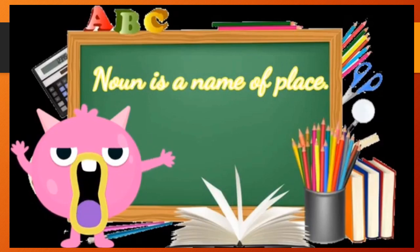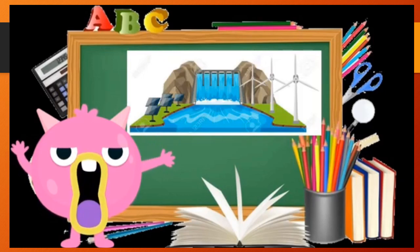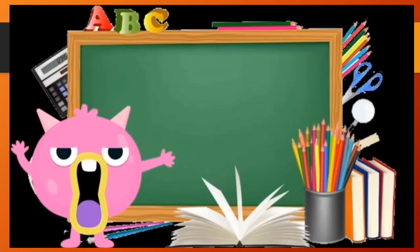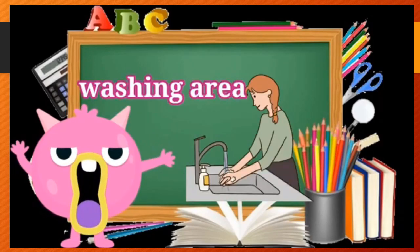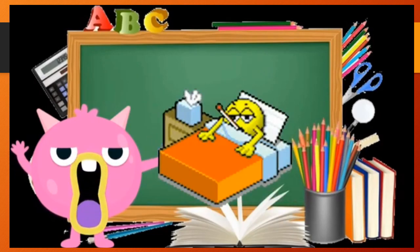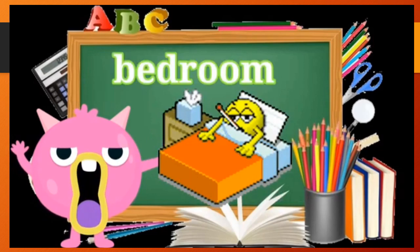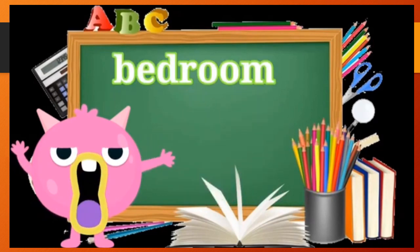Noun is also a name of place. Oh, look at this. This is a dam. A dam is a noun. Oh, the girl is washing at the washing area. Washing area is a noun. He is at the bedroom. Bedroom is also a noun.